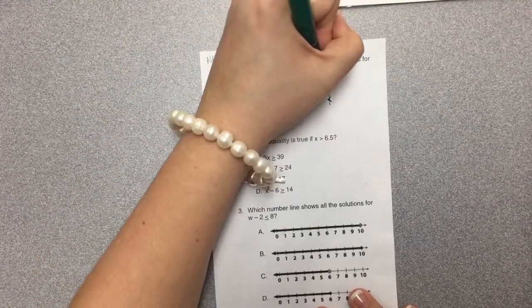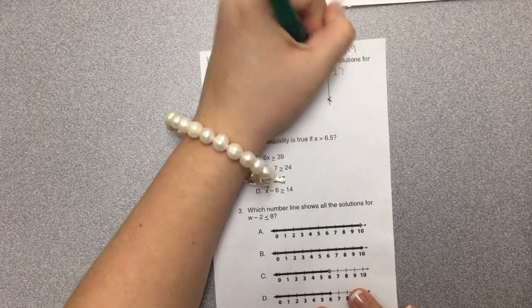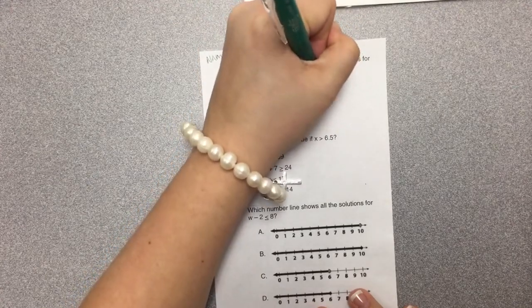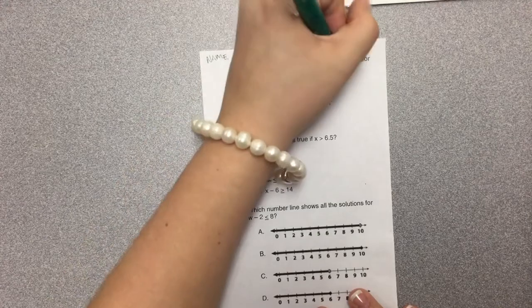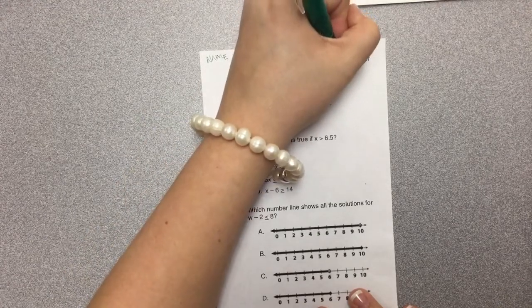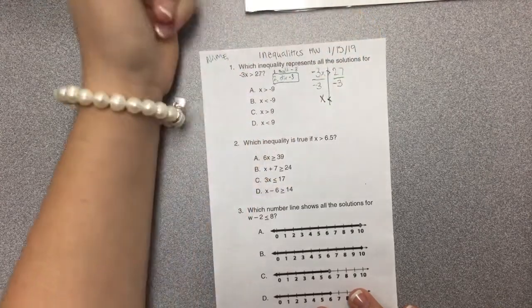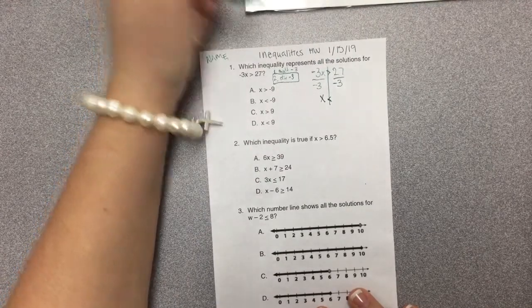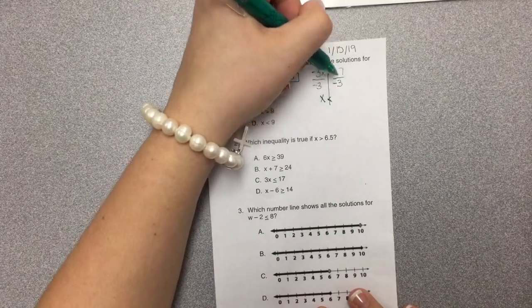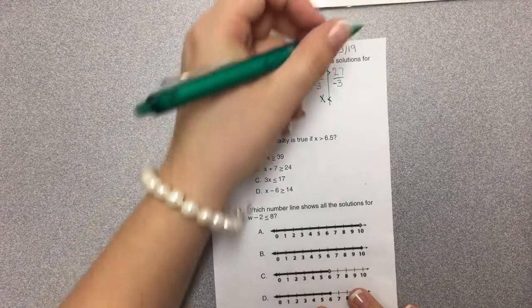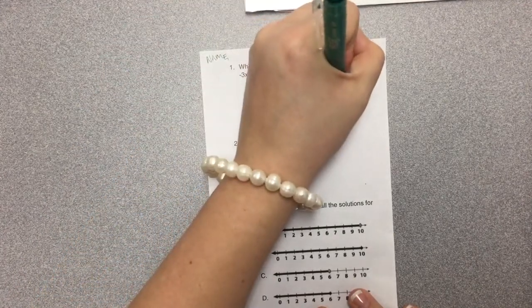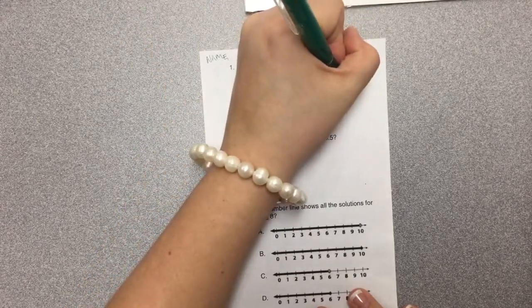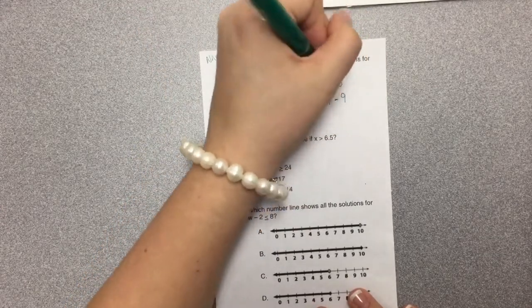I'm going to do the opposite on both sides to keep that balance. If I divide by -3 here, -3 divided by -3 gives me one, and one times x just gives me x. I need to divide by -3 on this side as well. 27 divided by -3, they're different signs, so I carry through that negative. 27 divided by 3 is 9, so x < -9.